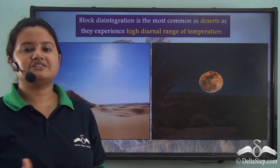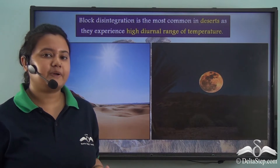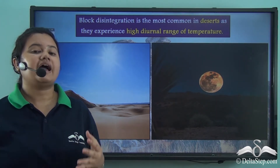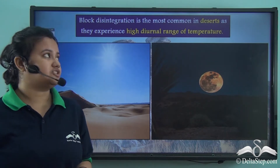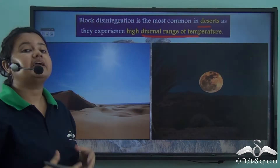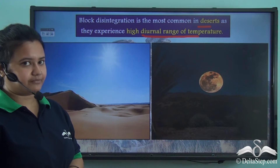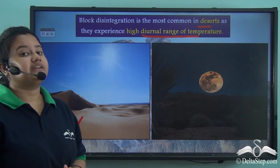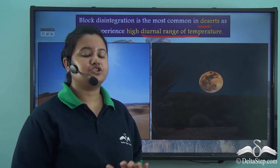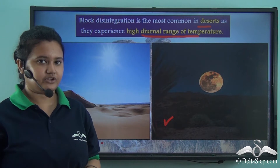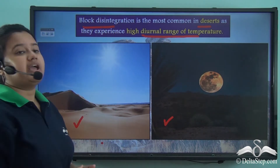The main factor behind expansion and contraction of rocks is the difference in temperature. Arid and semi-arid regions like deserts experience a high diurnal range of temperature, meaning high variation in daily temperatures. In deserts, sand is found in abundance and gets heated up rapidly during the day, then rapidly releases heat at night, making days hotter and nights cooler. Due to this wide variation in daily temperature, block disintegration is common in deserts.